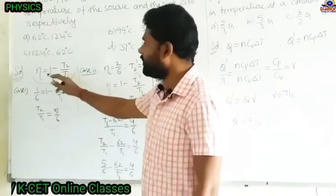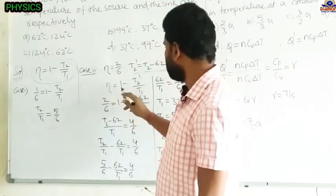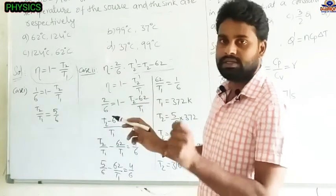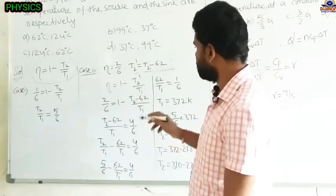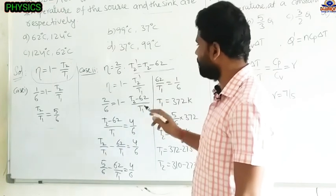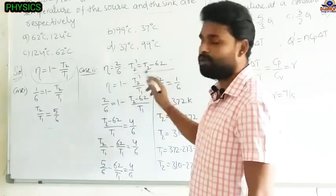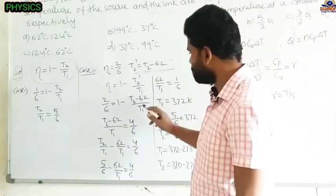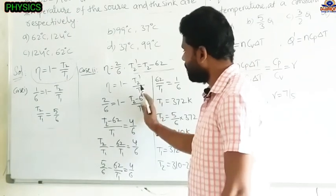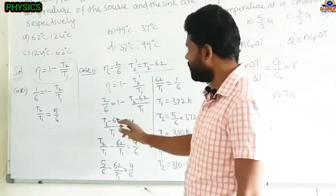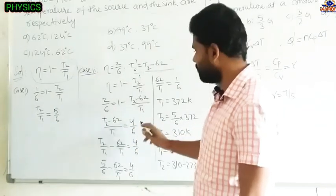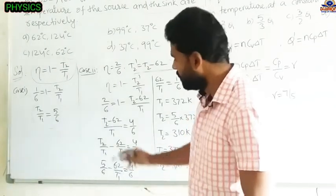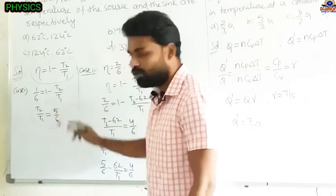Substituting in the formula: 2/6 = 1 − (T₂ − 62)/T₁. Sending (T₂ − 62)/T₁ to the left side and 2/6 to the right side: (T₂ − 62)/T₁ = 1 − 2/6 = 4/6. Writing individually: T₂/T₁ − 62/T₁ = 4/6.